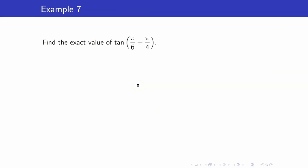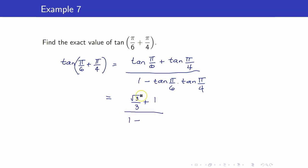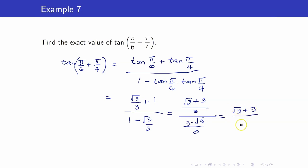For example, let's find the exact value of tangent(π/6 + π/4). Using the formula, this equals tangent(π/6) plus tangent(π/4), all over 1 minus the product of the two. We plug in the values and simplify.